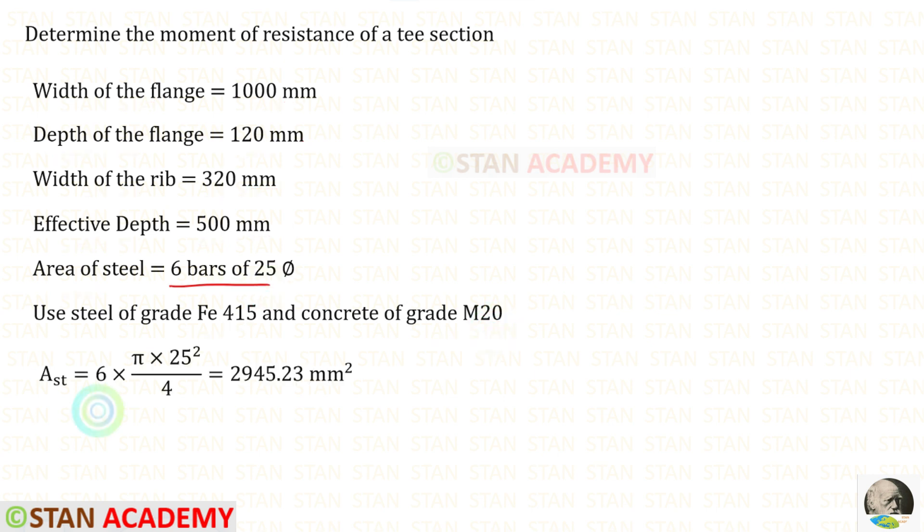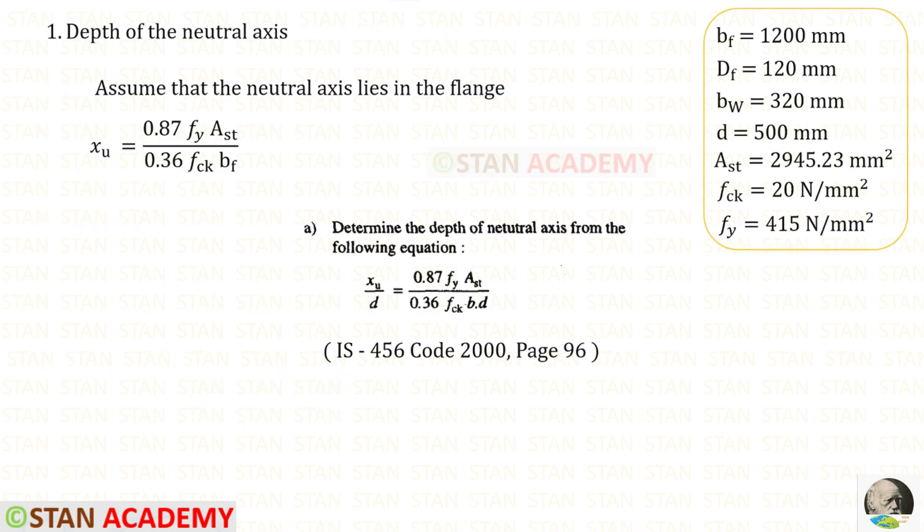Using this data we can find AST. First we need to find the depth of the neutral axis. Let us assume that the neutral axis lies in the flange. From the IS456 codebook page number 96, we need to copy this. We can eliminate D.